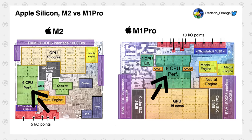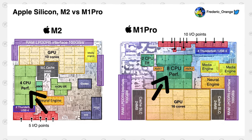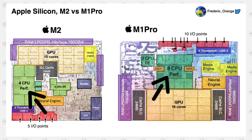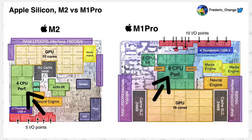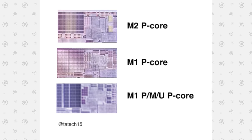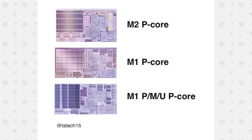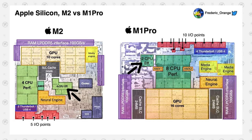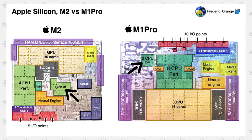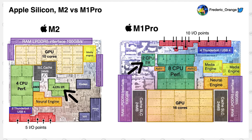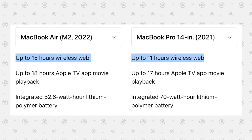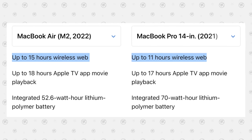As far as the CPU, the M2 has 4 performance cores compared to 8 on the M1 Pro. You might notice the M2 cores are actually quite a bit larger, so each one should be more powerful individually. As for efficiency cores, the M2 has 4 compared to only 2 on the M1 Pro, meaning the M2 should be more efficient at simple tasks, leading to better battery life.